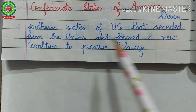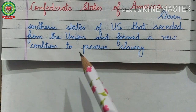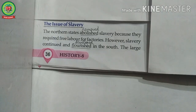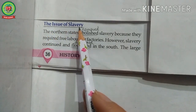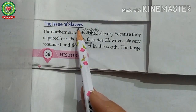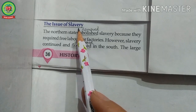Confederate States of America — the 11 southern states of the U.S. that seceded from the Union and formed a new coalition to preserve slavery. Now let us read and discuss the other causes of the American Civil War. The issue of slavery — it was one of the main causes of the American Civil War.